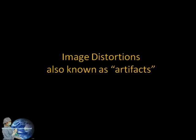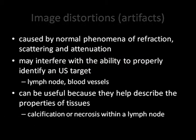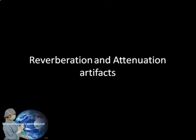In the last few slides, we covered basic ultrasound physics and terminology. Now let's talk about image distortion, also known as artifacts. Artifacts are caused by normal phenomena of refraction, scattering, and attenuation. While they may interfere with the ability to identify a lymph node or a blood vessel, they can also be useful because they reveal certain tissue properties. Common artifacts seen during EBUS imaging are reverberation and attenuation.